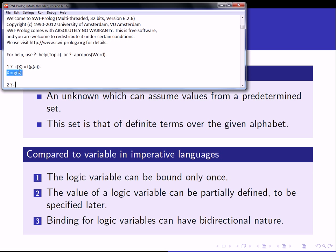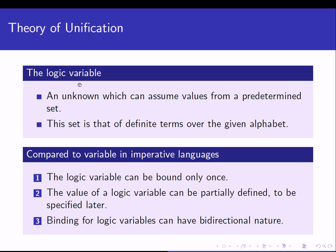Notice that I had a variable called X, which is a variable because it is capitalized. Let's discuss the logic variable in a little more detail. A logic variable is an unknown which can assume values from some predetermined set — the set of definite terms over the given alphabet. This relates back to the syntax of first-order logic discussed in the previous lecture, where one component of the first-order language was the alphabet.